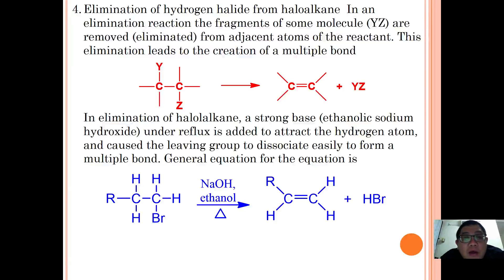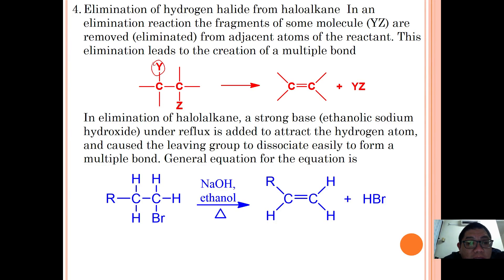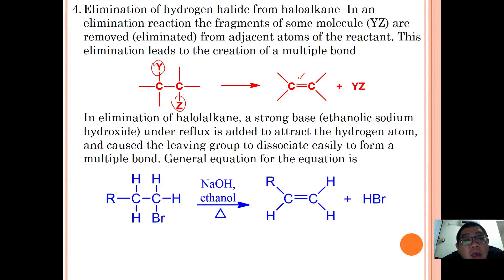The fourth reaction involves elimination of hydrogen halide (HX) from the haloalkane. In an elimination reaction, the fragment HX is removed from adjacent atoms of the reactant, leading to the creation of a multiple bond. Removing HX from adjacent carbons — carbons not from the same carbon — forms a double bond. With a strong base such as ethanolic KOH under reflux, the base attracts a hydrogen atom and causes the leaving group to dissociate, forming a multiple bond.